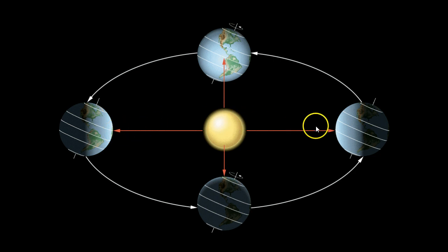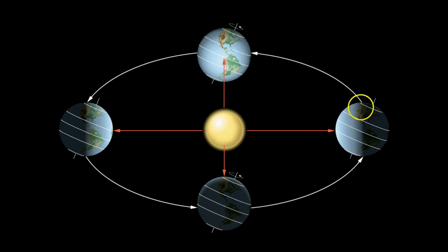The opposite happens during winter, just as we saw in that last slide. The direct angle of insolation is coming in and hitting 23.5 degrees south. Here we are tilted away from the sun, so it's winter, and it's hitting directly overhead at a 90-degree angle at 23.5 degrees south.